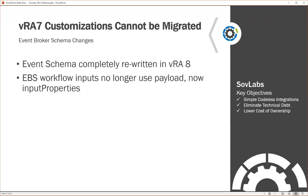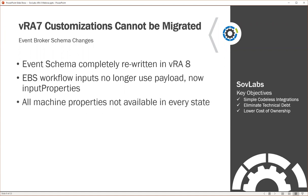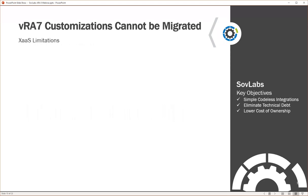The EBS workflows are no longer using the payload — now they use something called input properties, which doesn't necessarily give you access to all the metadata that was available in the payload. Not all machine properties are available in every state in the new EBS schema provided in VRA 8. A lot of integrations in VRA 7 were built around having access to all those machine properties throughout the entire lifecycle of the machine, and that is significantly different in VRA 8.